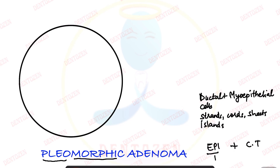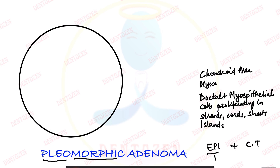The epithelial component consists of ductal and myoepithelial cells proliferating in strands, cords, duct-like arrangements, sheets, and islands. The second component is the connective tissue component, which can be seen as a chondroid area — a cartilage-like area — a myxoid area, or an osseous area, which is a bone-like area.